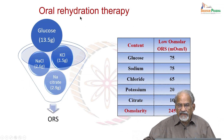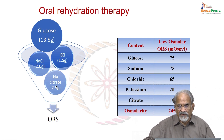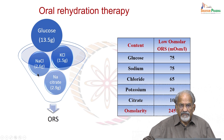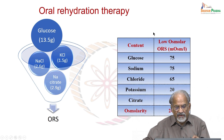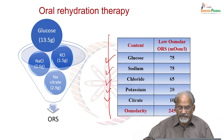Oral rehydration therapy (ORS) is something each and every person should know. It contains primarily glucose, sodium chloride, potassium chloride, and sodium citrate. Sodium citrate is used because it is converted to sodium bicarbonate in the body, taking care of possible acidosis. The initial formula used sodium bicarbonate but it had a short shelf life, so sodium citrate was substituted. This typical ORS composition — glucose, sodium, chloride, potassium, and citrate — gives an osmolality of 245, making it a low-osmolar ORS.